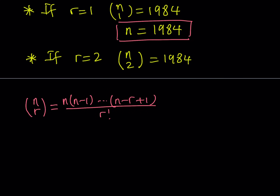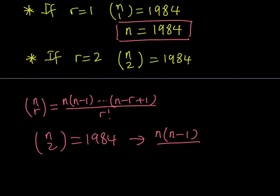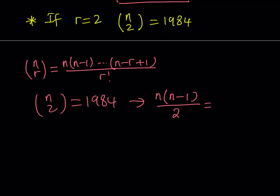In general, n choose r can be found using the following formula: n times n minus 1, dot dot dot, all the way up to n minus r plus 1, divided by r factorial. The numerator is basically the number of permutations you can generate with n and r, and the bottom one is always r factorial. So with n choose 2, since n choose 2 is equal to 1984, it means that it's n times n minus 1 divided by 2 factorial, so we're just going to divide by 2. I want this to equal 1984.